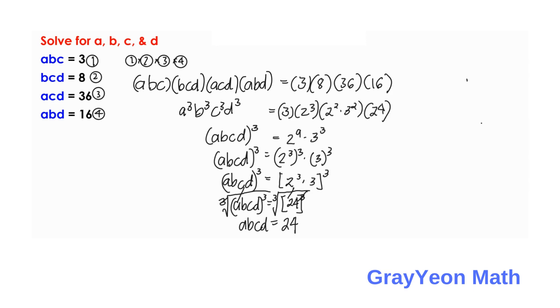So, abcd is equal to 24. Let us label this as equation 5.